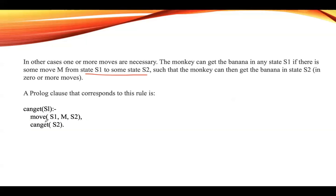For example, in the initial state — monkey at the door, box at the window, monkey not having banana — can_get of s1 returns false because monkey is not having banana. So we execute one of the four available moves to reach state s2 and then call can_get of s2. If the monkey still does not have banana, we backtrack to the previous state and execute another move. We repeat this process until the task is achieved — that is, until the monkey gets the banana.